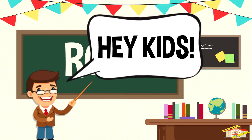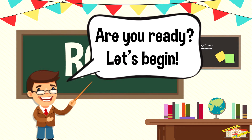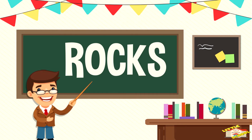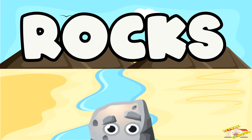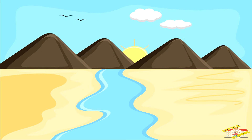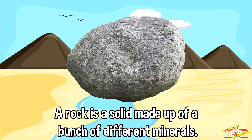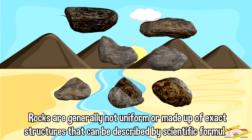Hey kids, in today's video we'll be learning about rocks. Are you ready? Let's begin. A rock is a solid made up of a bunch of different minerals. Rocks are generally not uniform or made up of exact structures that can be described by scientific formulas.